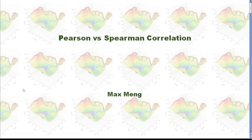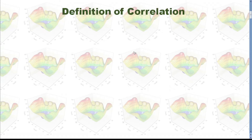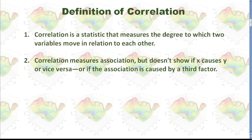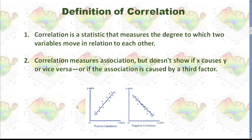This time I'm going to talk about the relationship and the difference between Pearson and Spearman correlation. Correlation is a statistic that measures the degree to which two variables move in relation to each other. Keep in mind, correlation measures association but doesn't show if x causes y or vice versa. For example, if we have two variables x and y and they have positive correlation, that doesn't mean x causes y or y causes x.